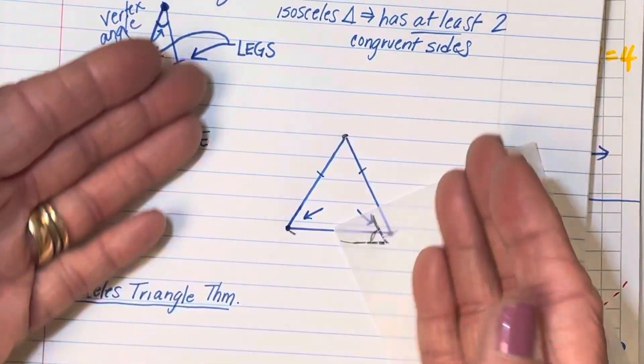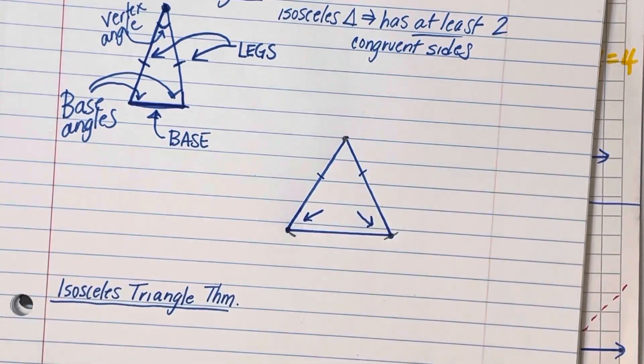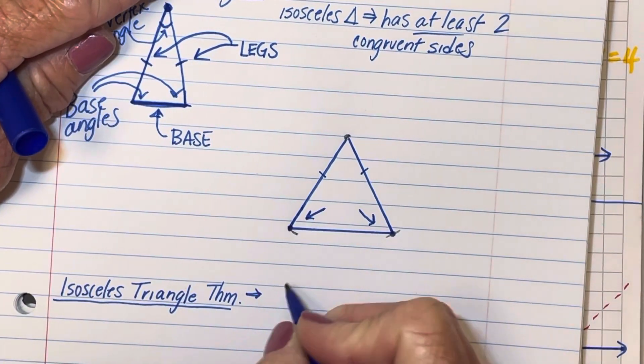Basically, it says in an isosceles triangle, the base angles are congruent. I'm going to word it just a little differently, but it means the same thing.